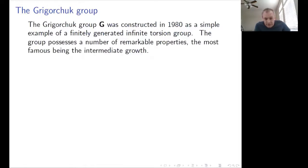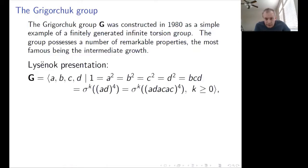The most important property is that this is a group of intermediate growth. The number of elements of length n in this group grows with n slower than the exponential function of n, but faster than any polynomial. By construction, the group was a transformation group. But let us begin with the representation due to Lysenok from 1985 as an abstract group by generators and relations.